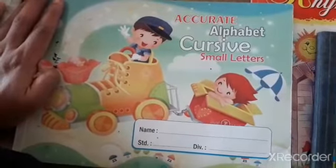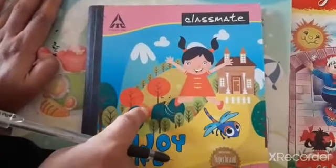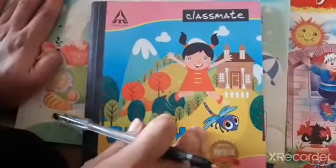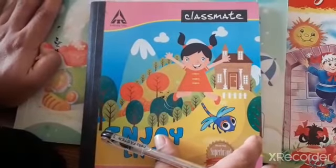So today you have to do in this book. Which letter will we do today? Can you say? Today we will do L for Lion, L for Lamb.